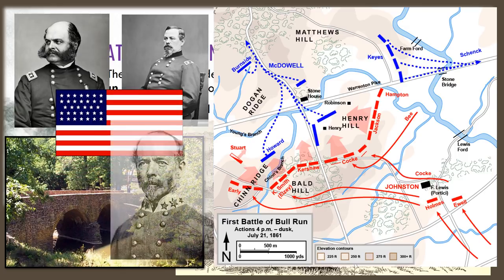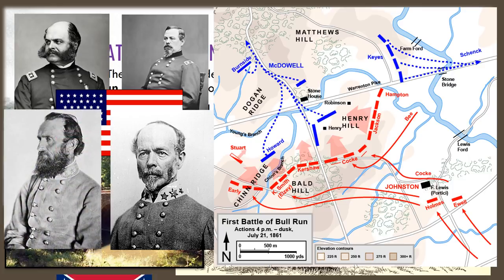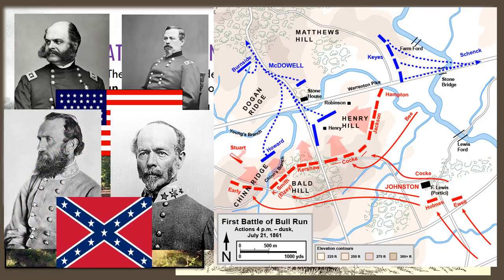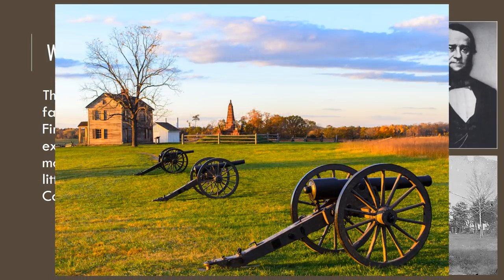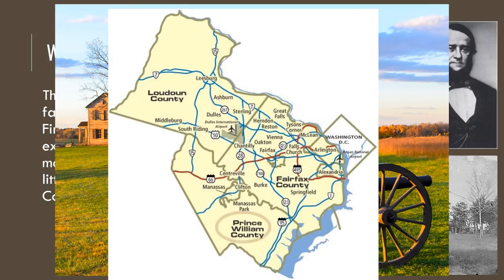Confederate Generals Jackson and Johnston chase the Union soldiers back to Washington DC. The First Battle of Manassas took place on the many farmlands southwest of Washington DC. One of the farmers who owned the land that became a battlefield was Wilmer McLean at Manassas, Virginia. The Civil War began on Wilmer McLean's farm in Manassas Junction, Virginia with the First Battle of Bull Run. A Union shell actually exploded in his kitchen. We can see how close this battle was to where we are in Loudoun County from this map.